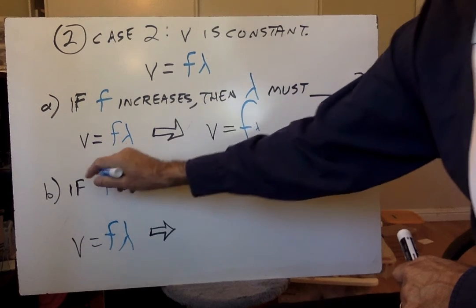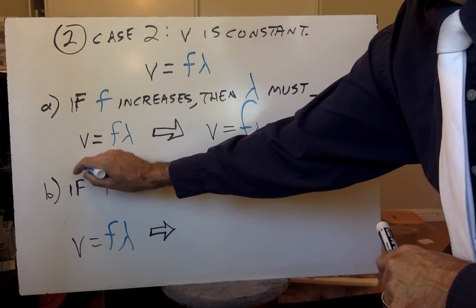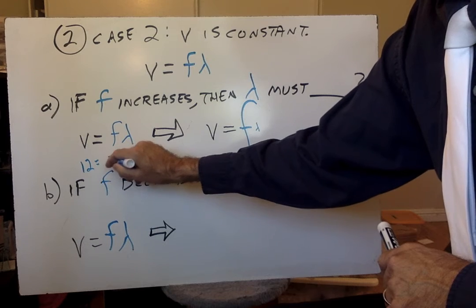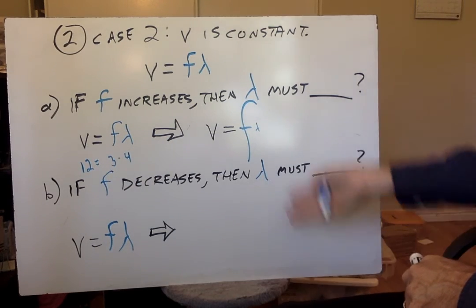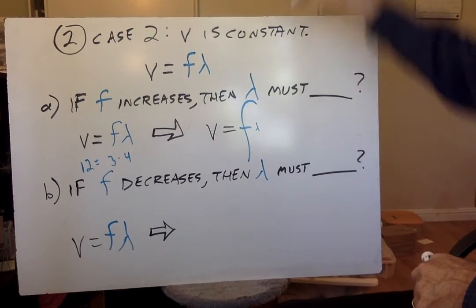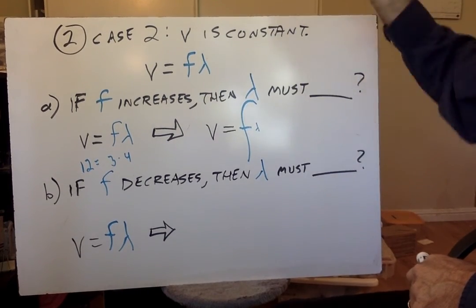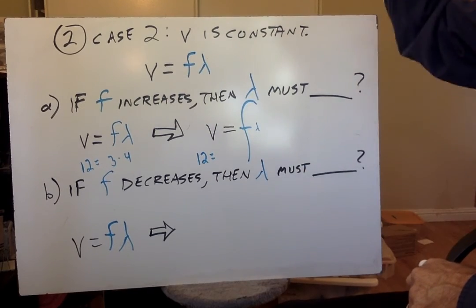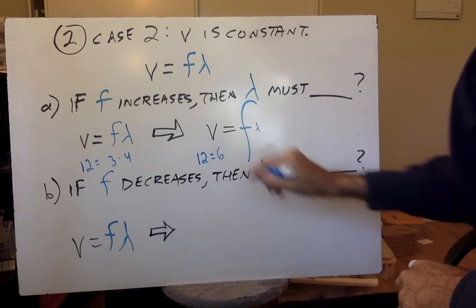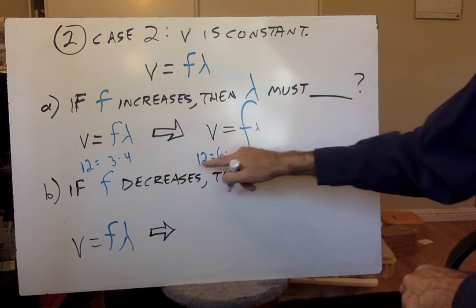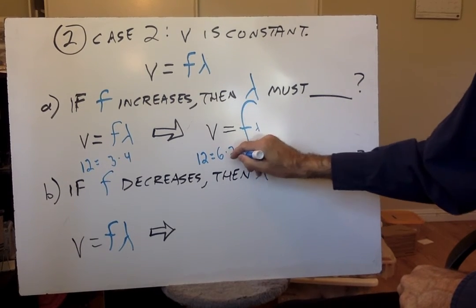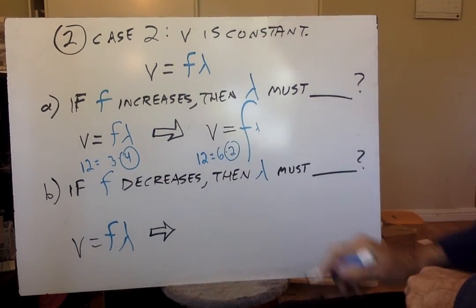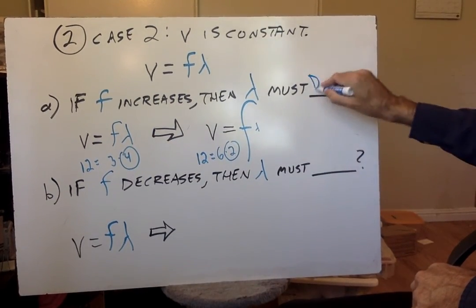An example of this might be, if you had, I'll just write this quickly as an example so you can see what the numbers... 12 equals, say, 3 times 4. And now we make the frequency bigger, we still need this to be 12, that's not changing. We make the frequency bigger, we make it, say, 6. Okay, 12 equals 6 times what? 2. So by making the frequency bigger, look what had to happen to the wavelength to keep it in balance. It had to get smaller, so it would decrease. And the way we say this is they're inversely related. One gets bigger, the other has to get smaller.